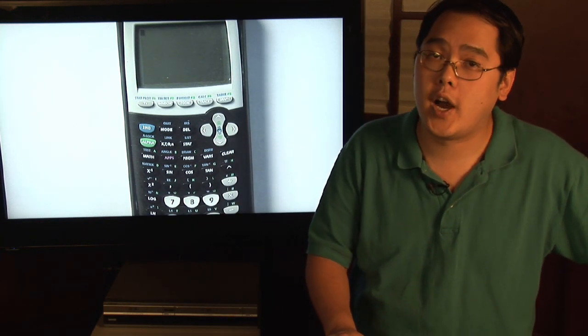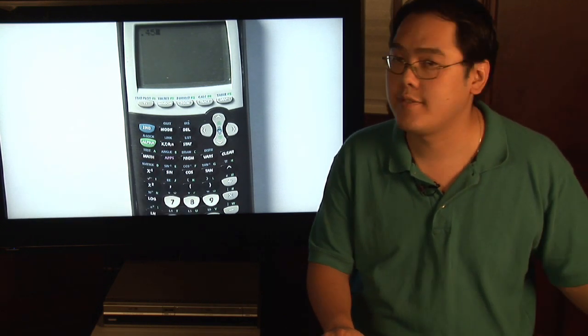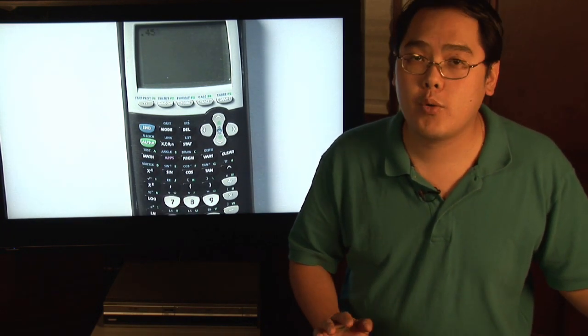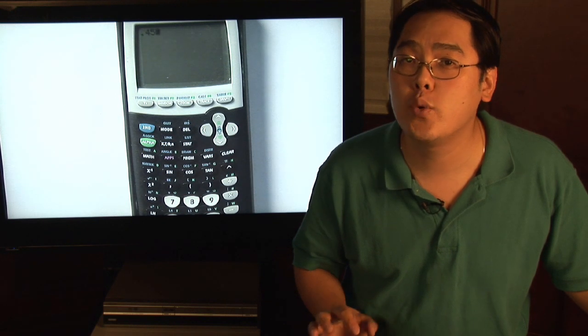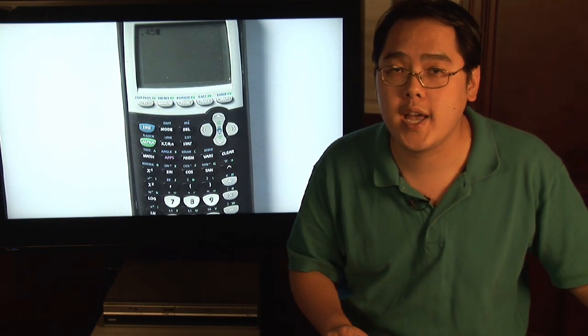Here's a quick way using a graphing calculator. Suppose you want to convert 0.45 into a fraction. What you want to do on a graphing calculator is simply press 0.45. Now before we convert to fraction form, keep in mind that the calculator will always give you the final answer in lowest terms. We know 0.45 is 45 hundredths, but the calculator will give it to you in lowest terms.